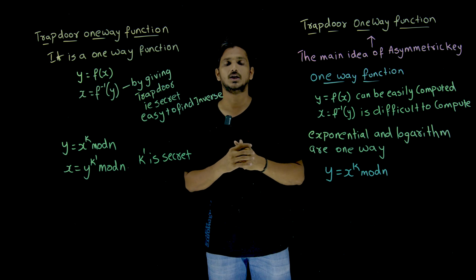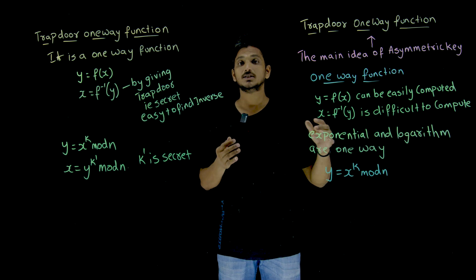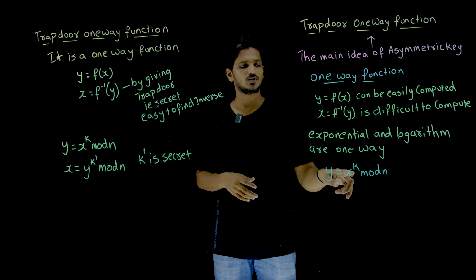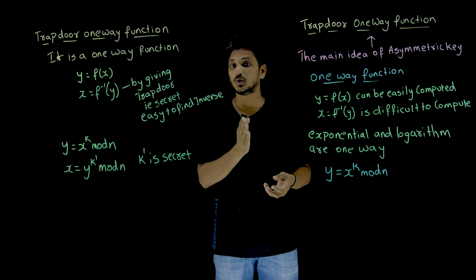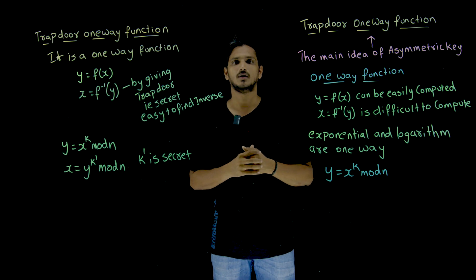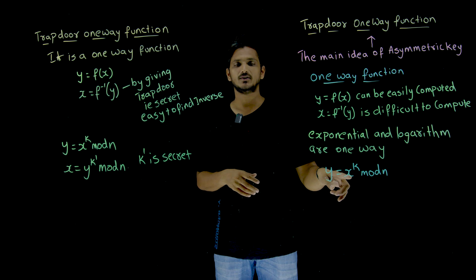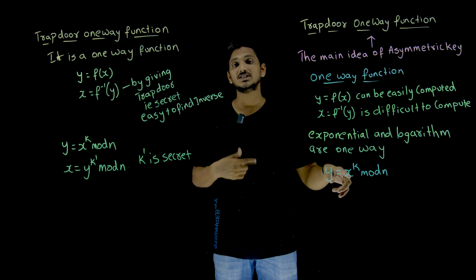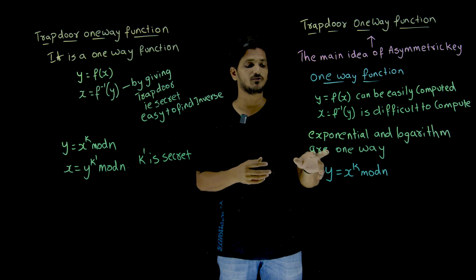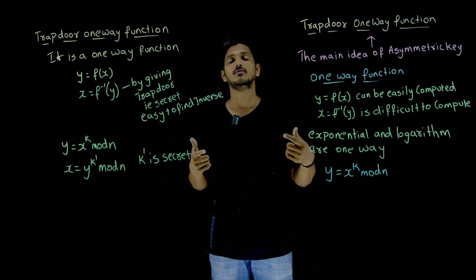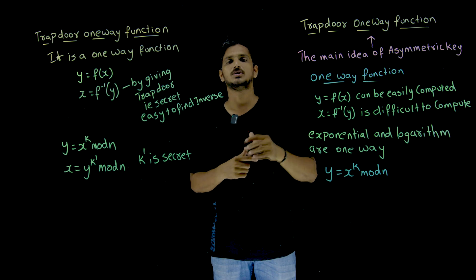We discussed exponential and logarithms in previous classes — these are one-way functions. Because y = x^k mod n can be easily found using the fast exponentiation algorithm, meaning we can do this in polynomial time. If x and k are given, it is easy to identify y using x^k mod n. But the opposite — if y is given, finding x is very very difficult; it is going to take exponential time because we need to apply logarithms.